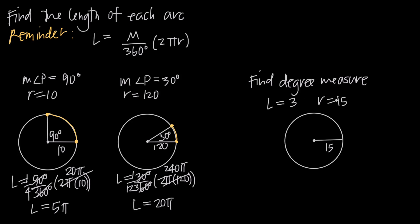If we plug these values into our formula for arc length, we know that the arc length is 3, so we plug that in for L. We get 3 is equal to M over 360 degrees — M is the value we're trying to find, which is the degree measure of the arc.